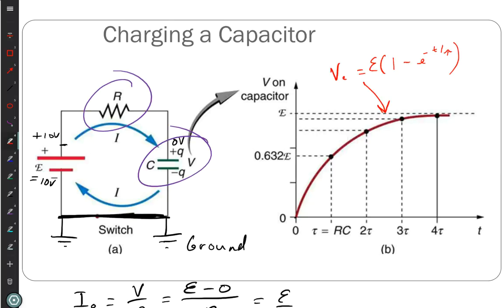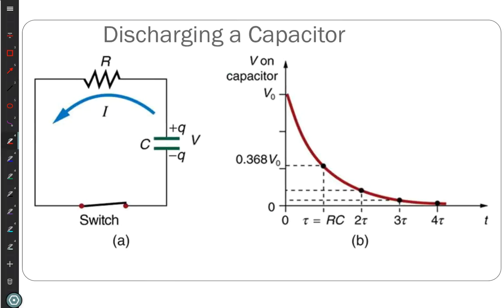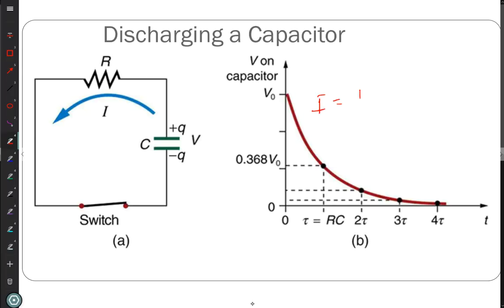What parameters set the time it takes to charge up the capacitor? Resistance and capacitance. Now this picture shows the same idea except the power supply has been removed — we're now discharging the capacitor. We still have the capacitor and the resistance, and the voltage follows an exponential decay equation with the same tau equals RC.